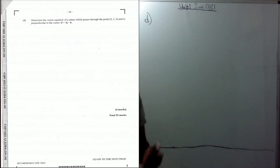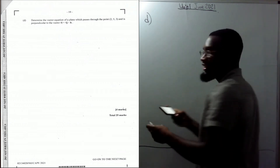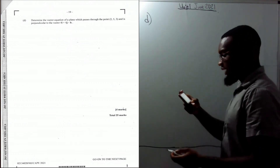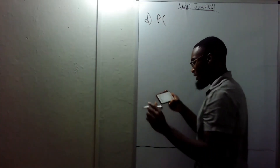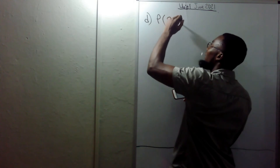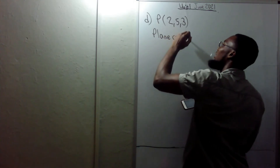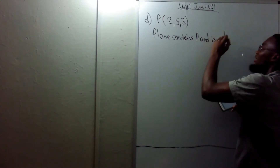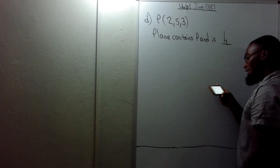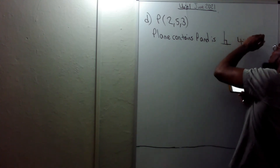Part D says: determine the vector equation of the plane which passes through (2, 5, 3) and is perpendicular to 4i plus 4j minus k. The point is P = (2, 5, 3). Since the plane is perpendicular to that line, the line is the normal to the plane. So the normal n equals (4, 4, −1).